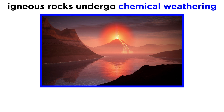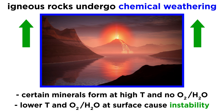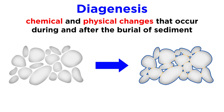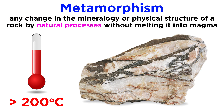This is why igneous rocks undergo chemical weathering at the surface. Minerals that form in an igneous environment are stable at very high temperatures, where both oxygen and water are scarce, but they are not stable in the water and oxygen rich conditions at the surface, therefore they react to form more stable minerals like clay. Diagenesis can also be thought of as super-low-grade metamorphism, where the slightly increased pressures and temperatures deep within a sedimentary basin can cause recrystallization of minerals like calcite.